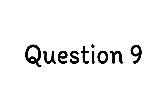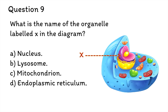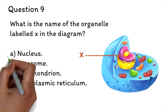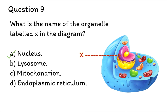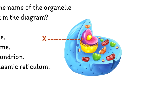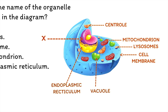Question 9: What is the name of the organelle labeled X in the diagram? A. Nucleus, B. Lysosome, C. Mitochondrion, D. Endoplasmic reticulum. The answer is A, Nucleus. You need a working knowledge of plant and animal cells and should be able to identify and label the major organelles. This is an animal cell — here are the organelles. Pause the video and go through it.